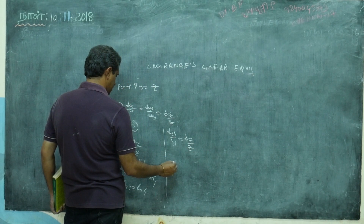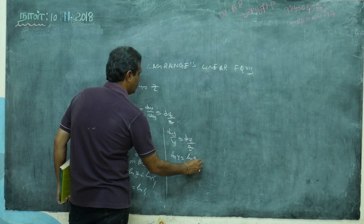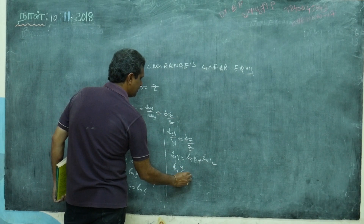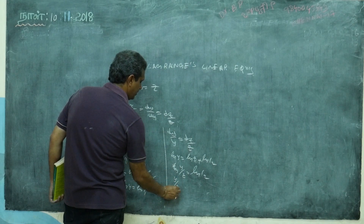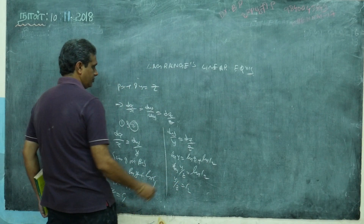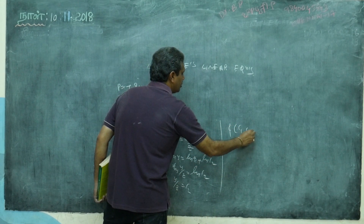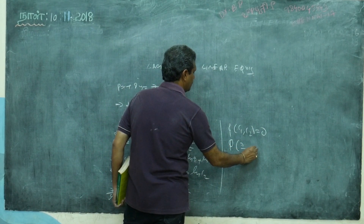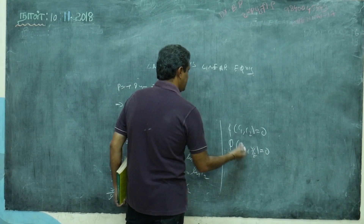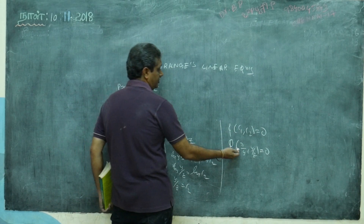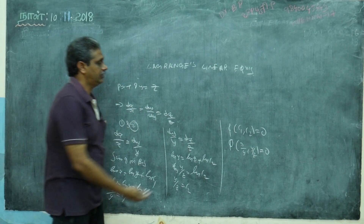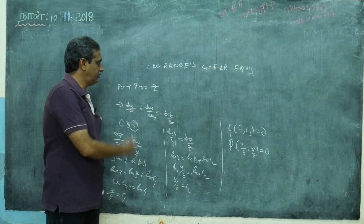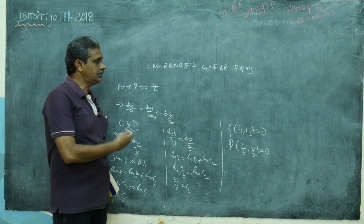Taking the second and third: dy/y = dz/z. Integrating both sides: log y = log z + log c₂, giving y/z = c₂. The general solution is phi(c₁, c₂) = 0, i.e., phi(x/y, y/z) = 0. This is the answer. If you are given this solution and asked to find the PDE, you will get back px + qy = z.